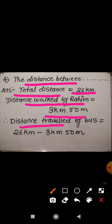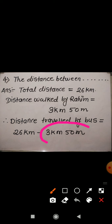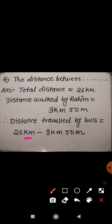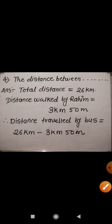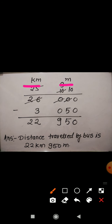So here we have to find out how much distance he travelled by the bus. It's very simple — you have to subtract the distance walked by Rahim from the total distance. So the distance travelled by the bus is equal to 26 km minus 3 km 50 meter. Now here you can see the units are km and m. Hence to subtract these distances, first we make two columns — the first is of km and the second is of m.